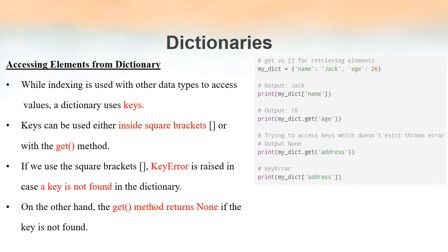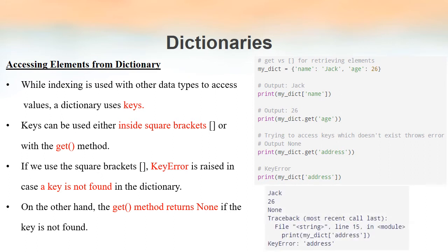We have a dictionary named my_dict with key-value pairs 'name': 'jack' and 'age': 26. When we use my_dict['name'], since 'name' is a key in my_dict, the value 'jack' will be printed. Similarly, my_dict.get('age') passes the key as a parameter to the get method, so the corresponding value 26 will be printed. When we try to access the key 'address' using the get method, we get no output because that key is not in the dictionary, and using square brackets generates a KeyError.